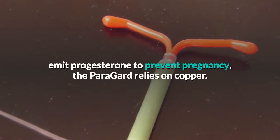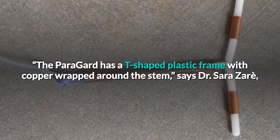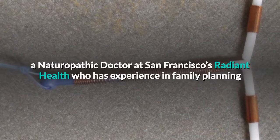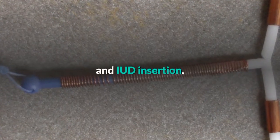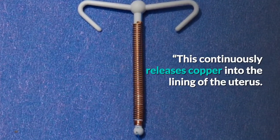the Paragard relies on copper. The Paragard has a T-shaped plastic frame with copper wrapped around the stem, says Dr. Sarah Zaire, a naturopathic doctor at San Francisco's Radiant Health who has experience in family planning and IUD insertion. This continuously releases copper into the lining of the uterus.